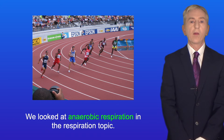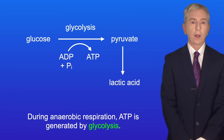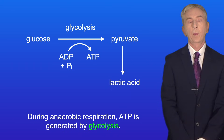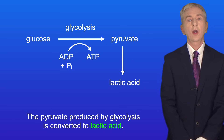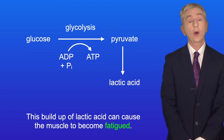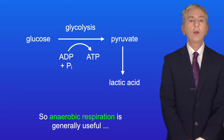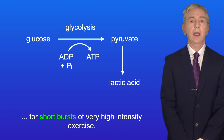We looked at anaerobic respiration in the respiration topic. During anaerobic respiration, ATP is generated by glycolysis. The pyruvate produced by glycolysis is converted to lactic acid, and this buildup of lactic acid can cause the muscle to become fatigued. So anaerobic respiration is generally useful for short bursts of very high intensity exercise.